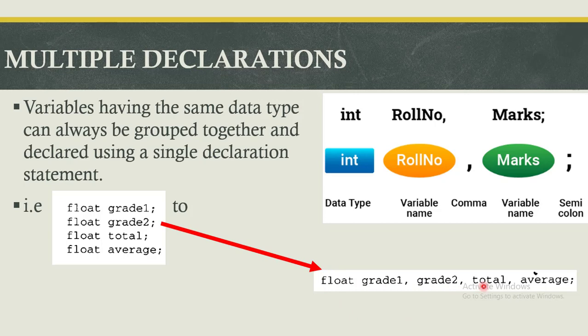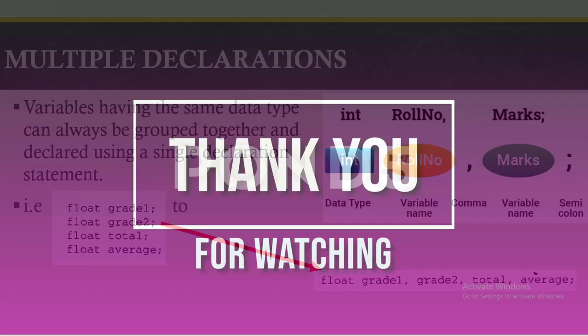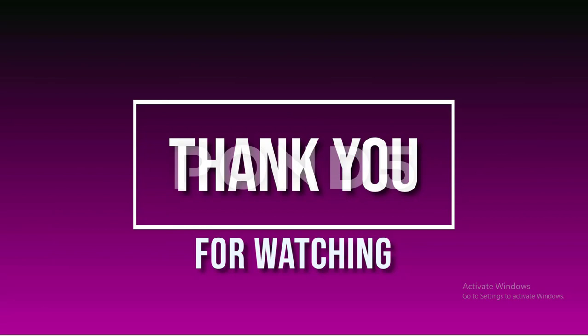In the same case, you could have a data type of int and suppose you want to store two variable names: one is called roll number, the second one is called marks. Instead of declaring int roll number, int marks, you can just use a single declaration statement: int roll number comma marks, and then you have your semicolon. Thank you for watching and see you in the next lesson.